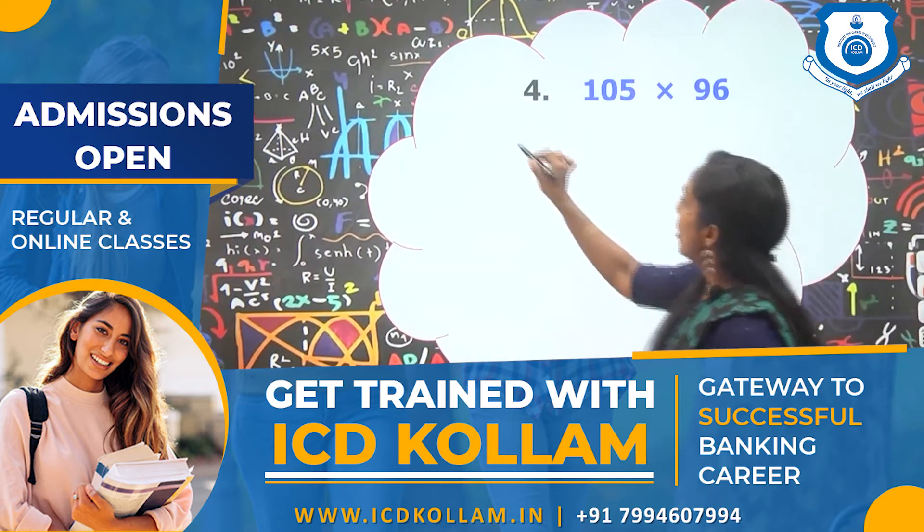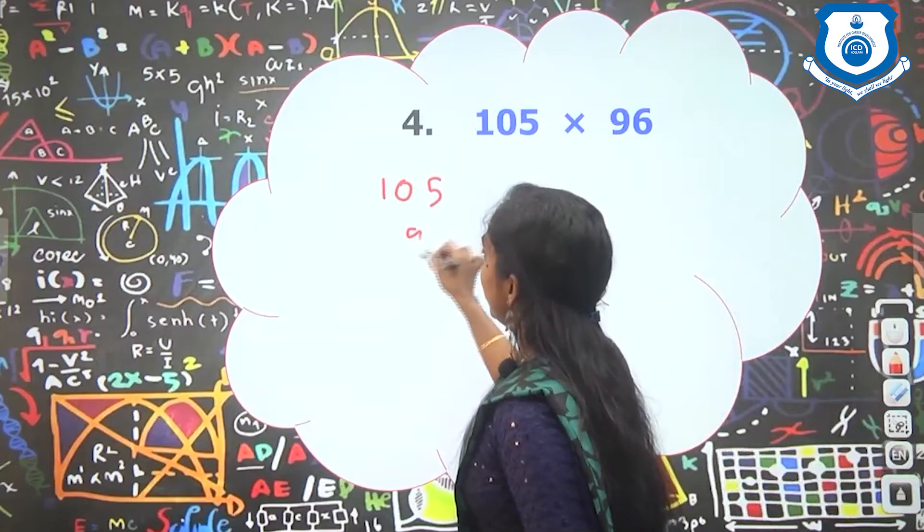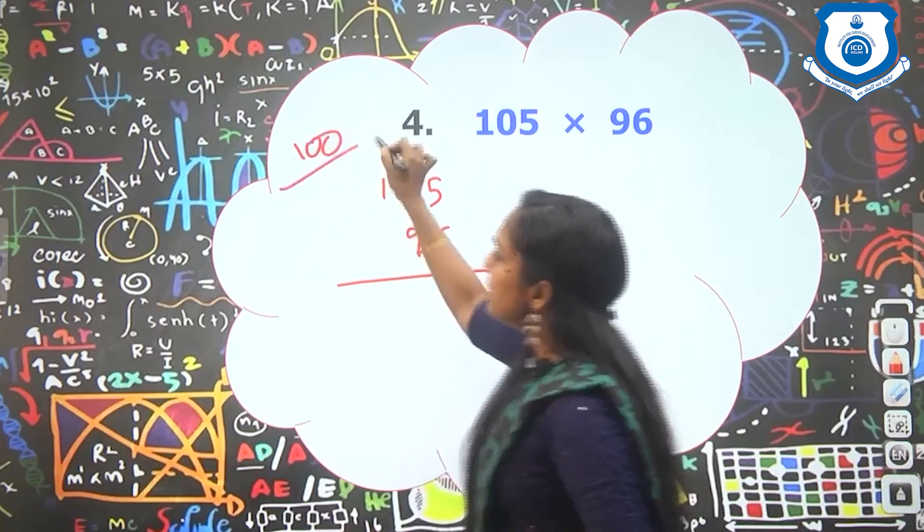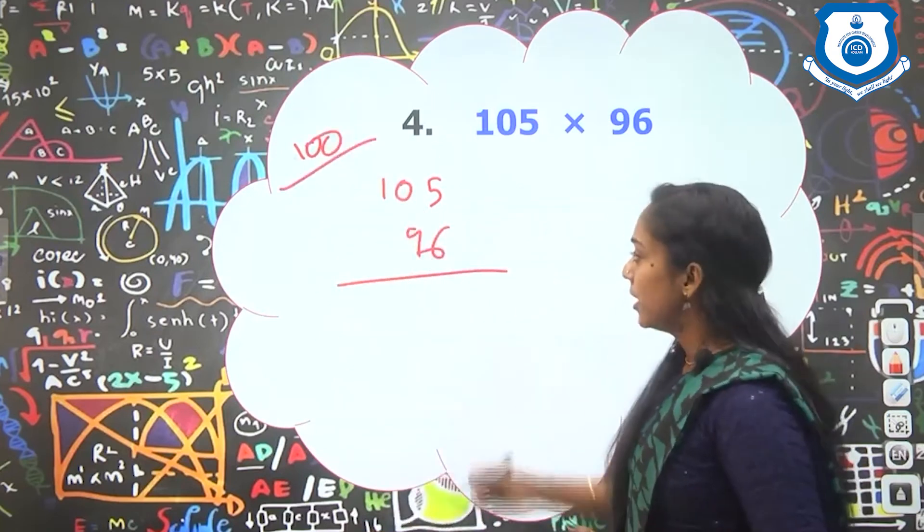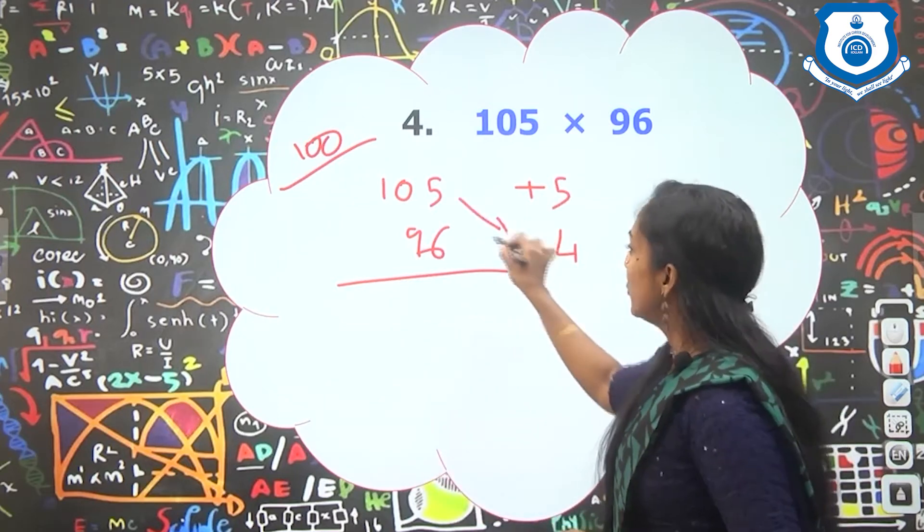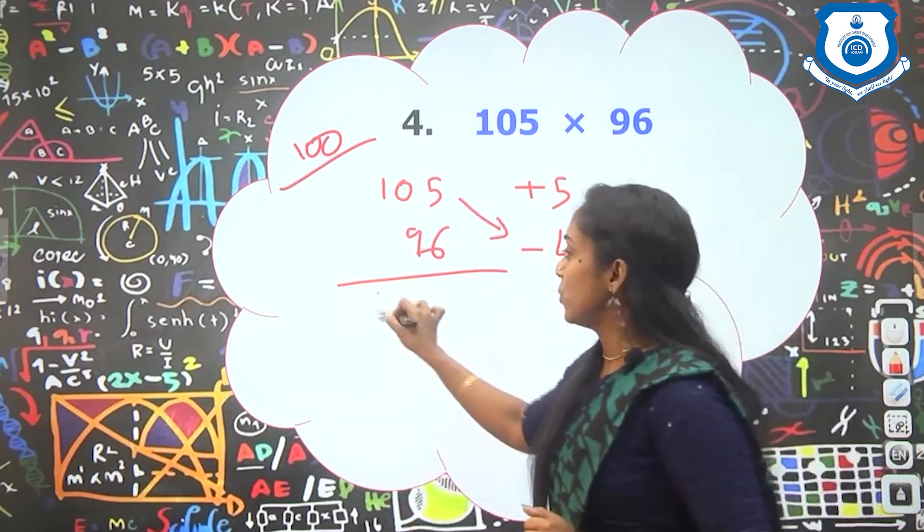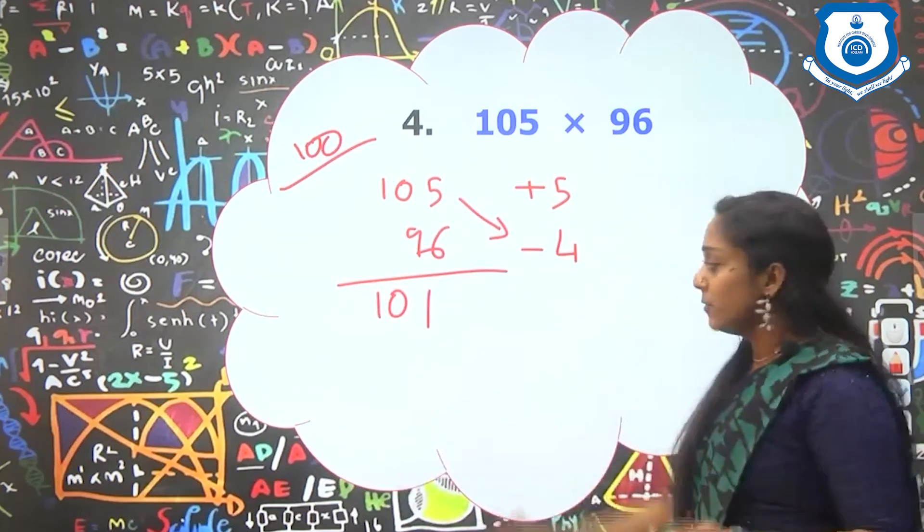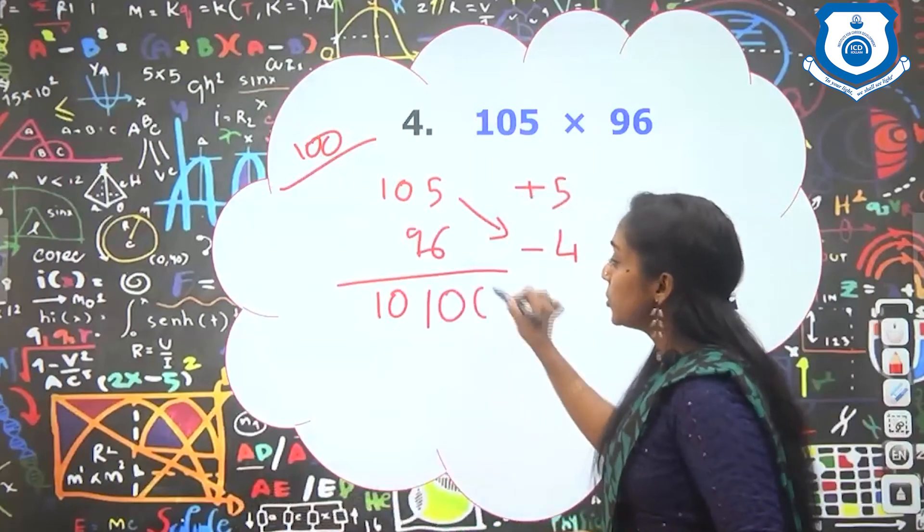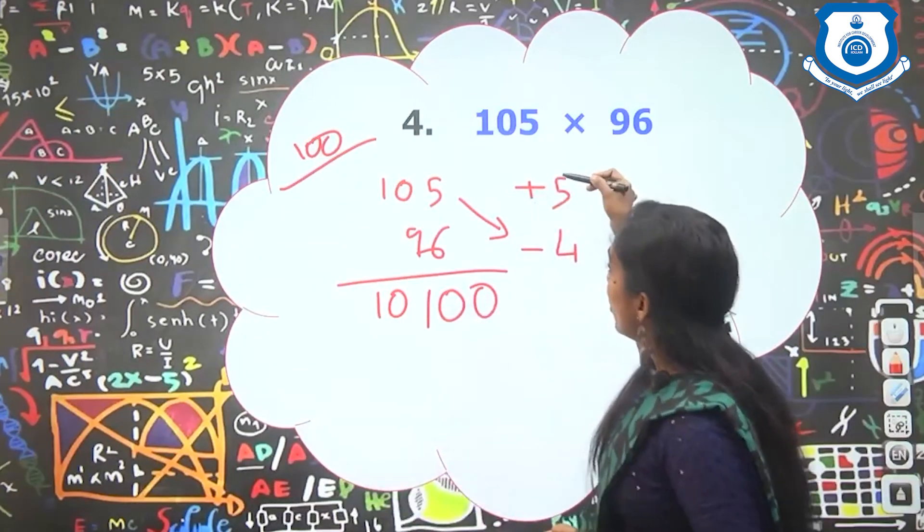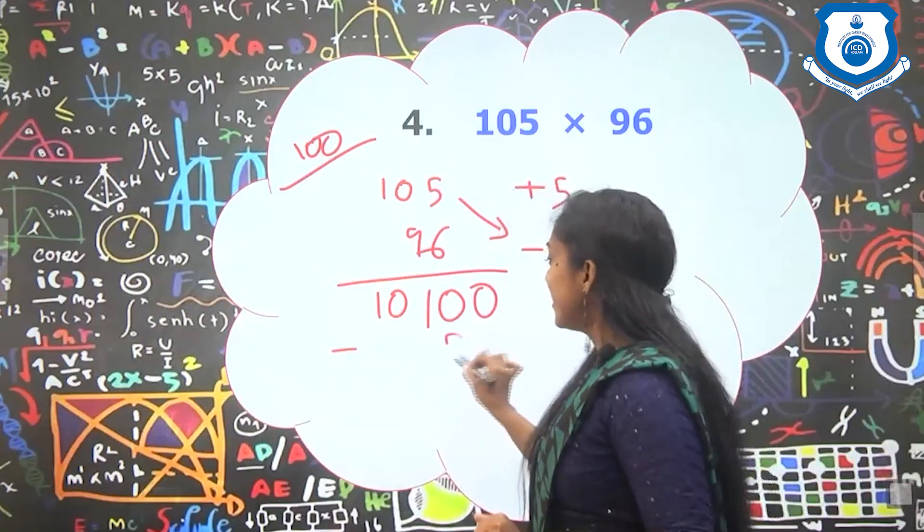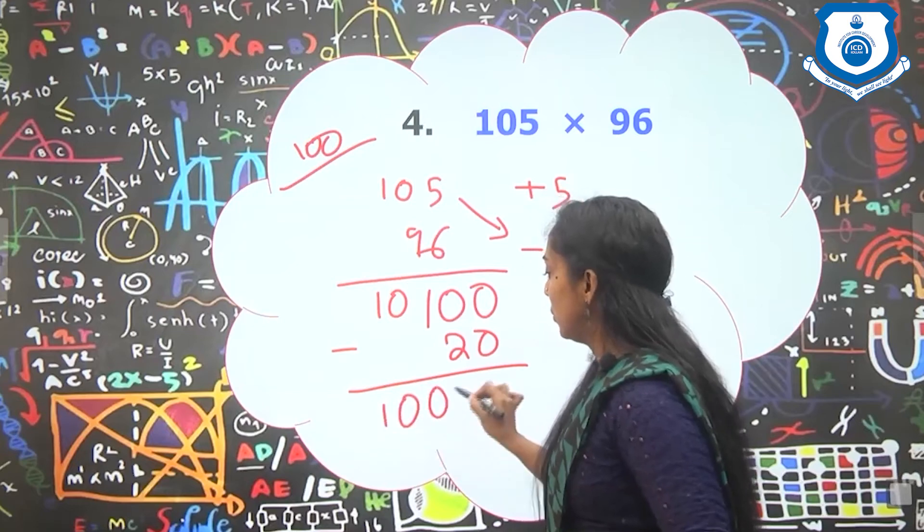Question 4: 105 into 96. Here one number is greater than our base 100, and the next number is less than our base. So this is plus 5 and this is minus 4. Second step, 105 minus 4 which is 101. Now into this number into our base. Our base is 100. So 101 into 100 is 10100. Now plus 5 into minus 4 is minus 20. So minus 20. This will be 100, this will be 10080.